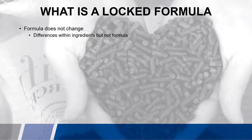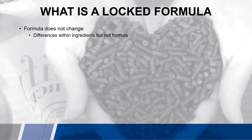On the flip side, what is a locked formula? Simply put, it's a formula that does not change. There can be differences within ingredients — such as alfalfa sourced from Arizona versus Utah versus New Mexico — but not necessarily the formula. Some manufacturers take this locked formula mindset further and actually source those ingredients from the same place, to add that level of consistency in the product, so there's not as many differences in the ingredients and certainly not a difference in the formula.